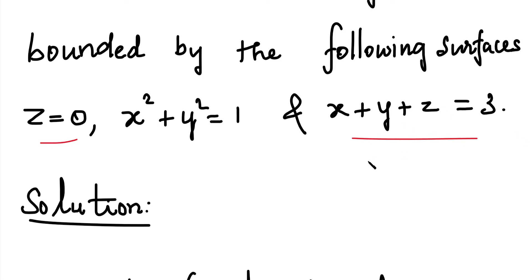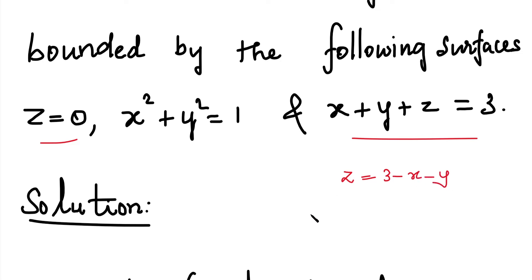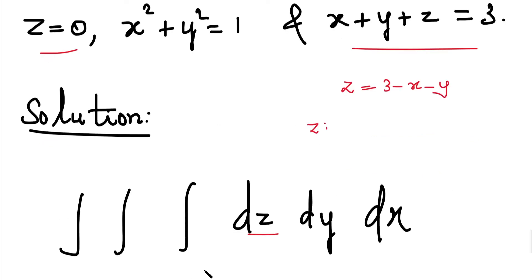And the last equation gives us the upper limit of z. Solving for z from x plus y plus z equal to 3, we move x and y to the right side. So the upper limit of z is 3 minus x minus y. Thus, lower limit is 0 and upper limit is 3 minus x minus y.